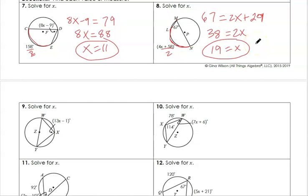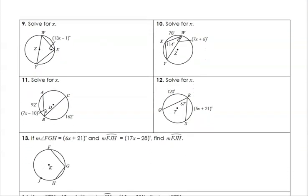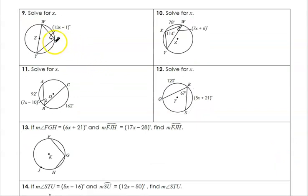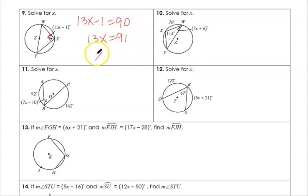In number 9, we're finding angle X. One side of the inscribed angle is the diameter, so the angle across from it is a right angle. We can write the equation: 13X minus 1 equals 90. Adding 1 to both sides, then dividing by 13, gives us our solution for X.